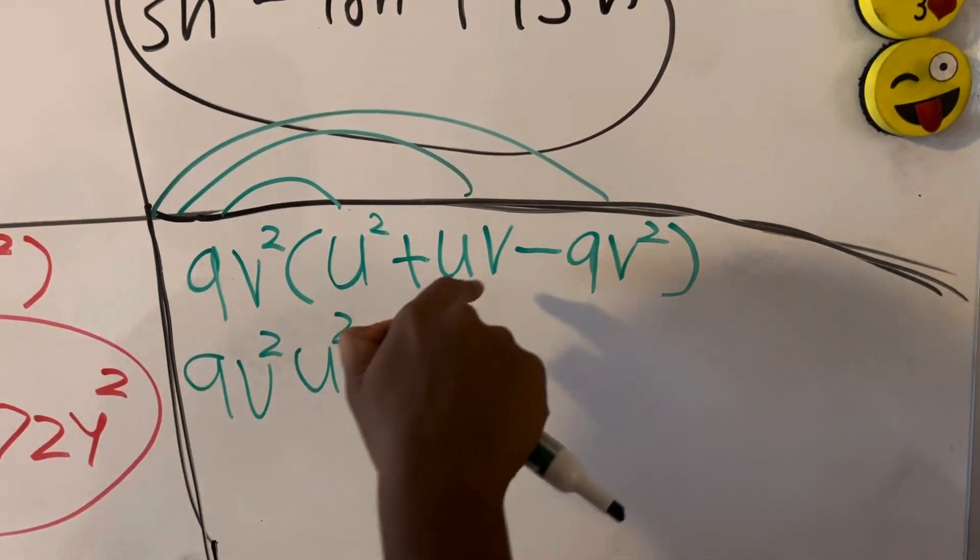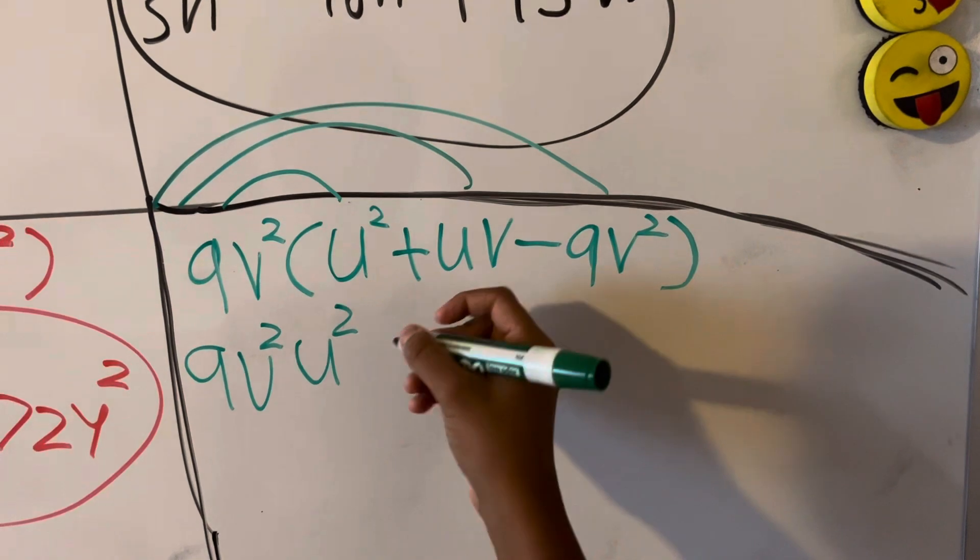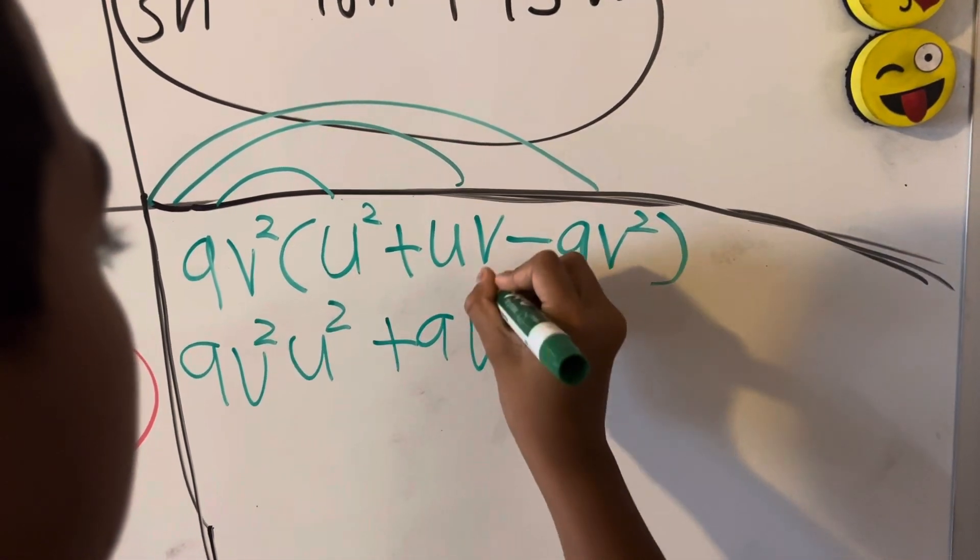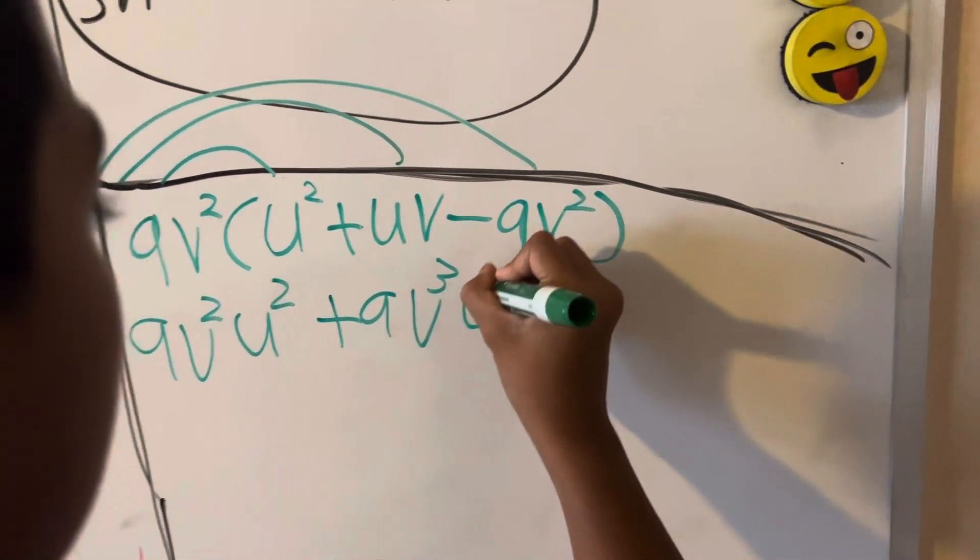9v squared times v is 9v cubed. So we're at plus 9v cubed. You cannot combine variables, so we're just going to have a u.